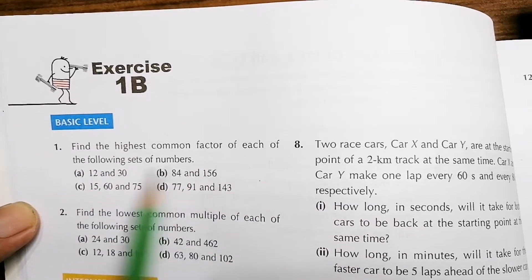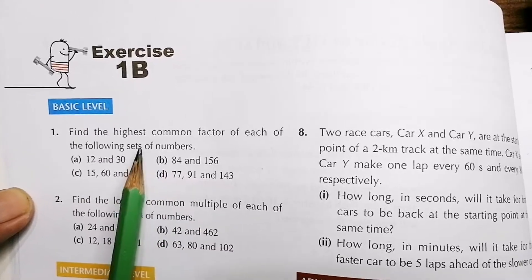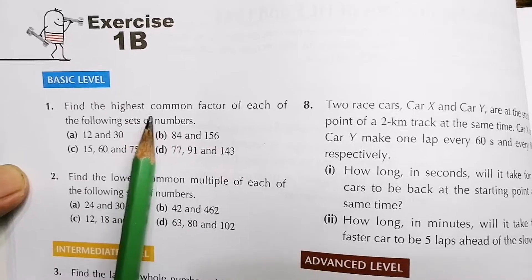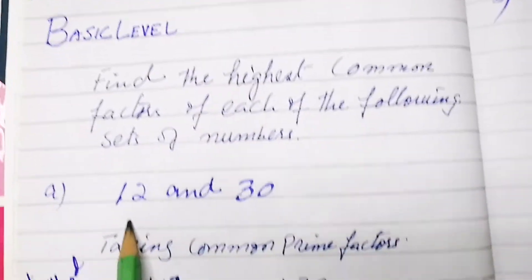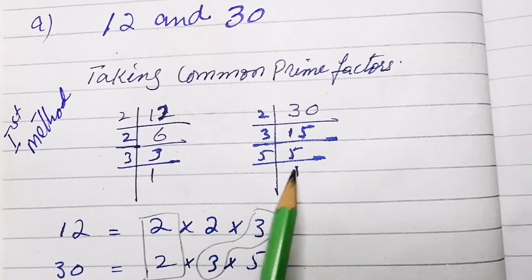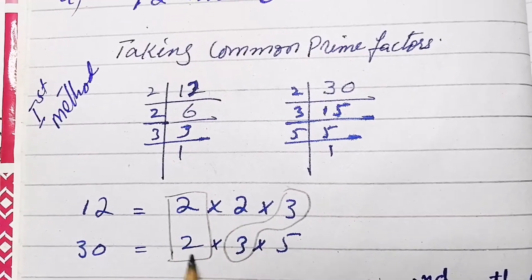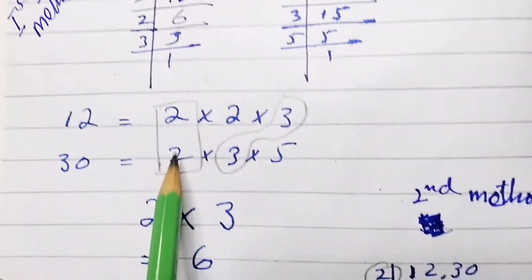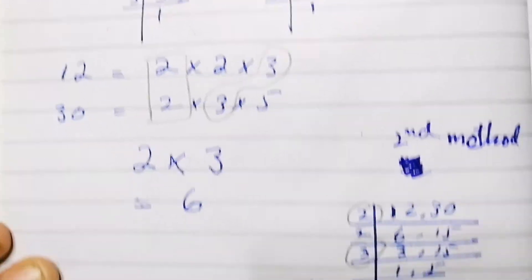Find the highest common factor (HCF) of each of the following numbers. I have solved these questions for you. For 12 and 30, we take their common prime factors separately, then identify the common factors. 2 and 3 are common, so 2 × 3 = 6. This is the first method.